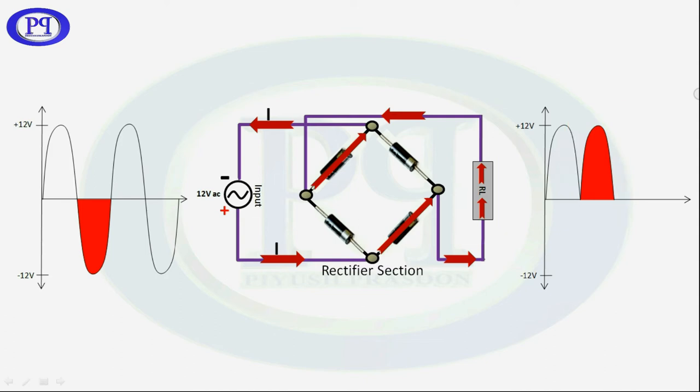So again the next positive signal will repeat the same tendency in the circuit as well as the output signal, and similarly the second negative cycle will also give us the same output.